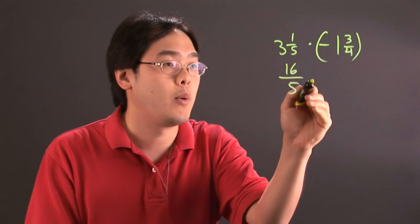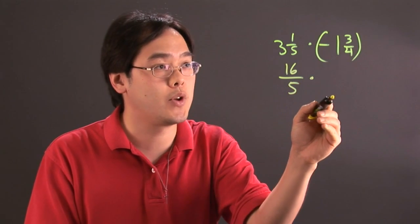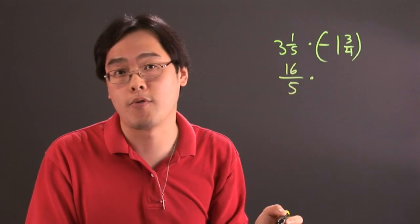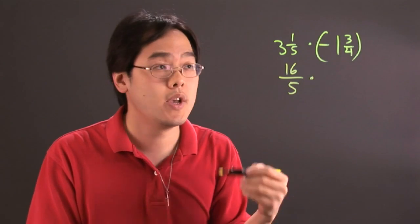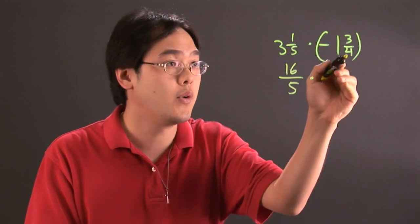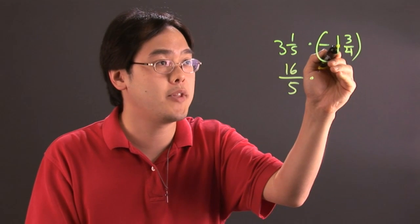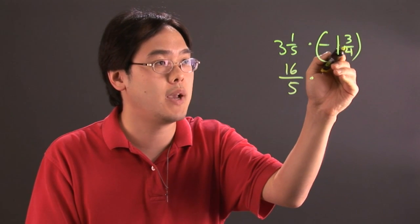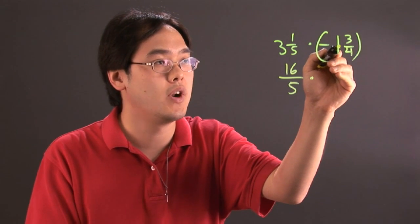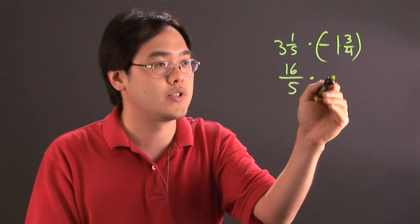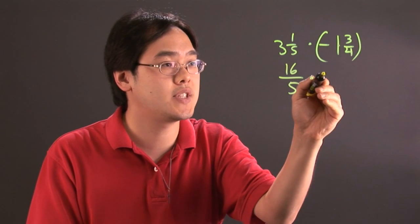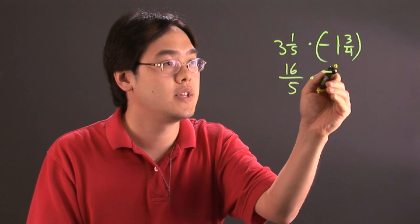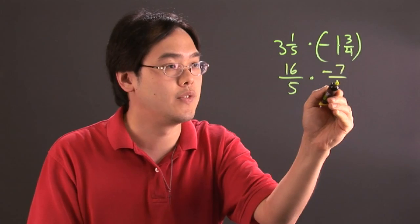Now, when you're multiplying by the negative 1 and 3/4, you've got to convert this to an improper fraction. Take the denominator, multiply by the whole number — 4 times 1 is 4, add the 3 is going to give you 7 — so it's really 16/5 times negative 7/4.